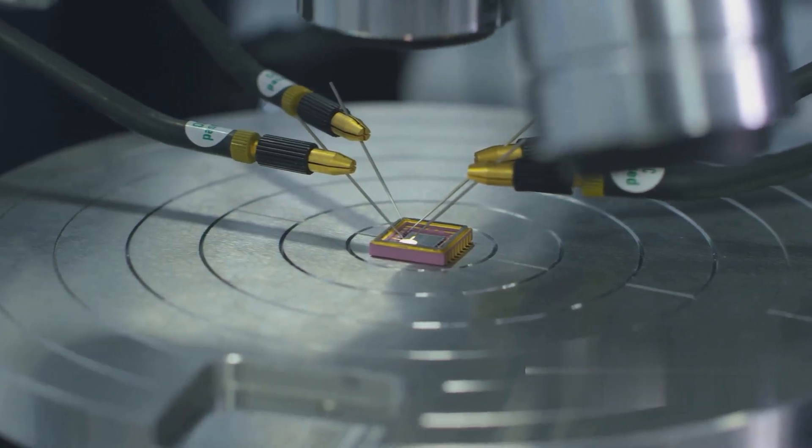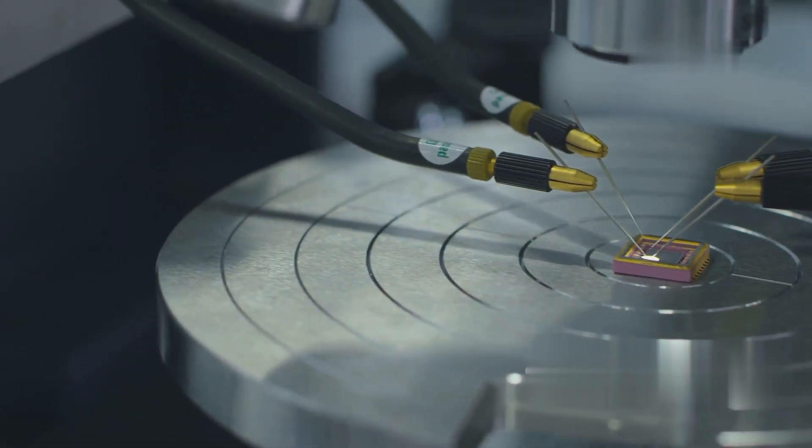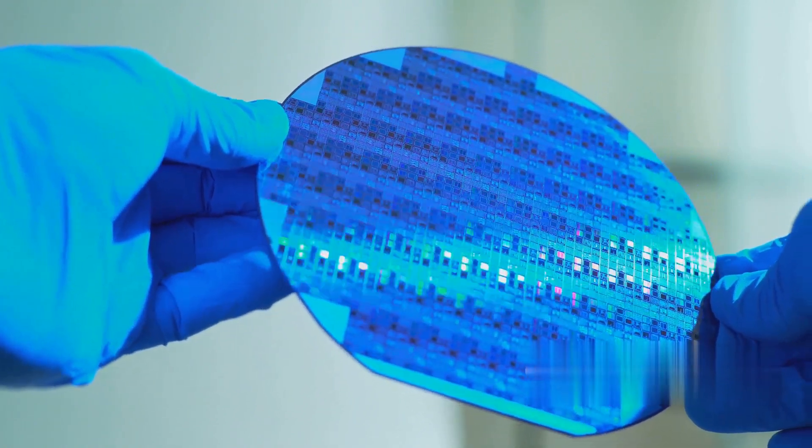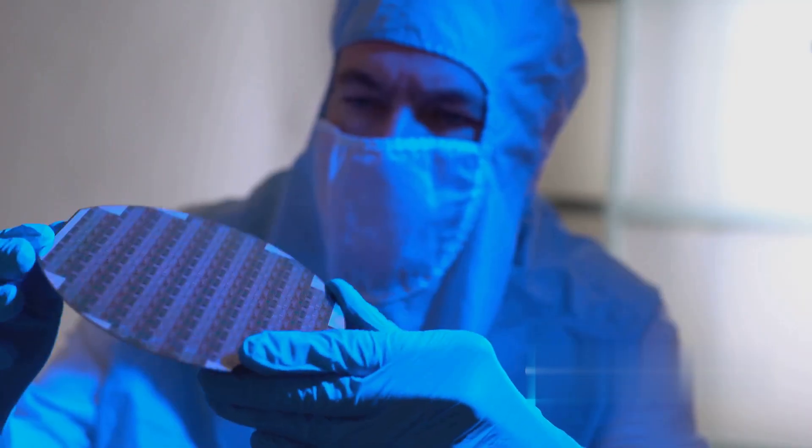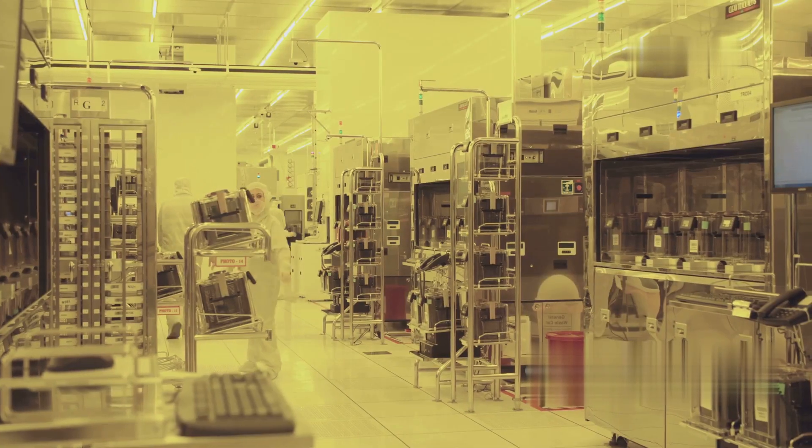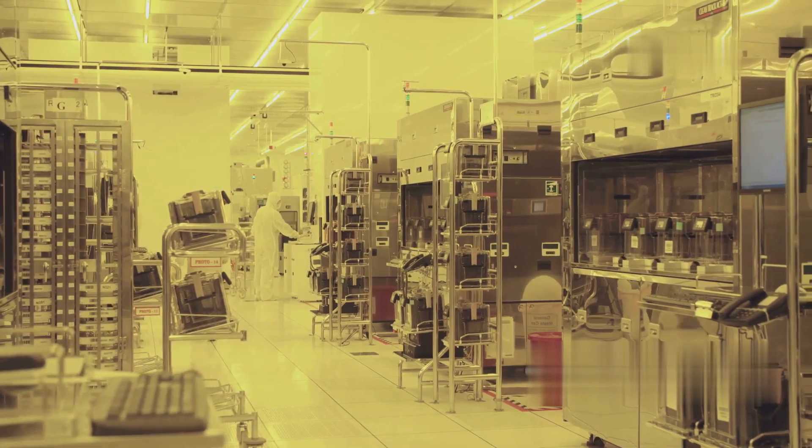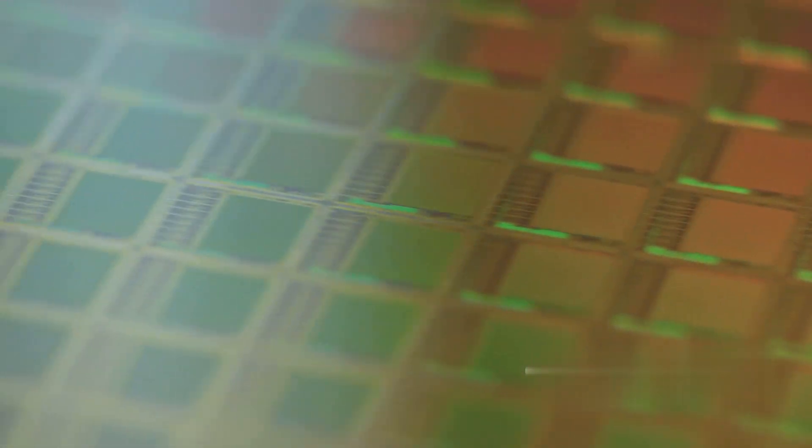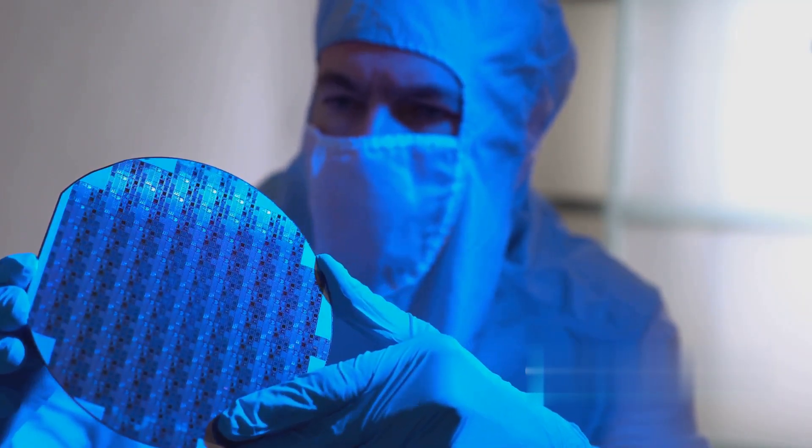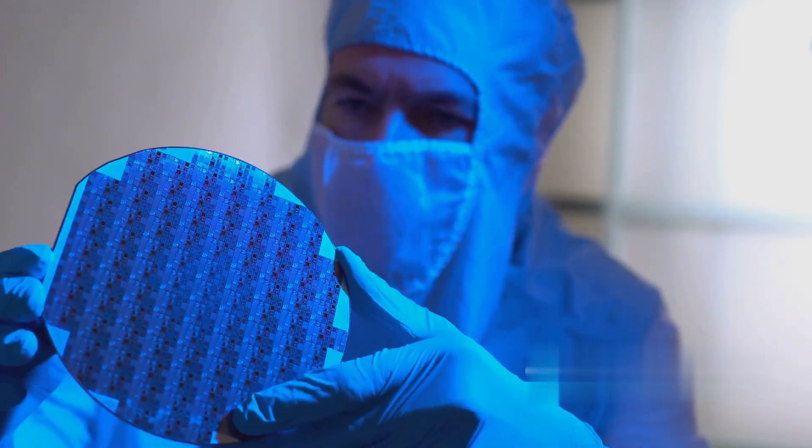Photolithography is the art of using light to transfer intricate patterns onto the silicon wafer. It's akin to photography, but instead of capturing an image, it creates a blueprint for the transistor structure. The process begins with coating the wafer with a light-sensitive material called photoresist. A photomask, a glass plate containing the desired circuit pattern, is placed over the wafer. Ultraviolet light is then shone through the mask, exposing the photoresist in the areas where the mask allows light to pass. The exposed photoresist undergoes a chemical change, becoming soluble in a developer solution. The wafer is then immersed in the developer, which removes the exposed photoresist, leaving behind the desired pattern on the wafer surface.